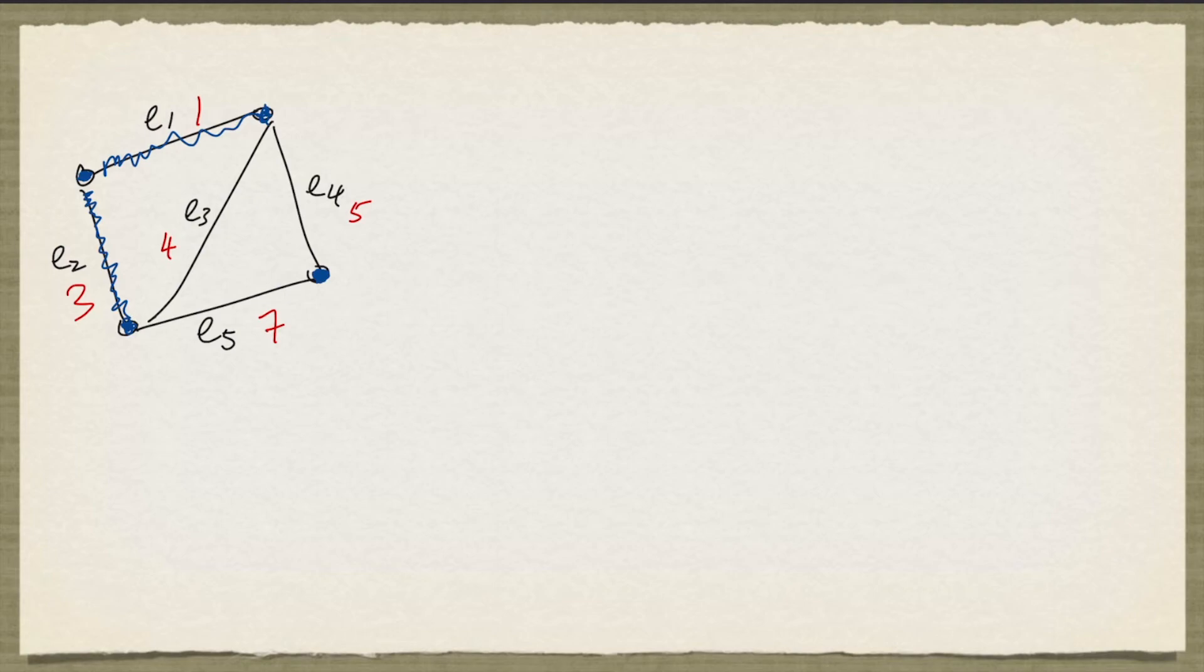If we look at E3, it does not join two different components of the spanning subgraph we have so far, so we do not add E3. We now consider E4, and it joins two components of this spanning subgraph, so we add E4.